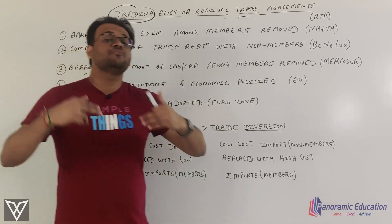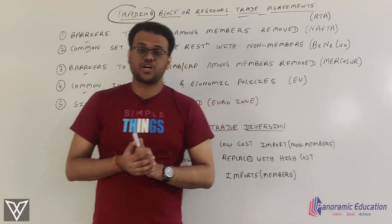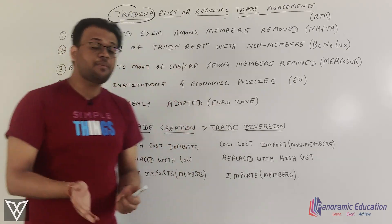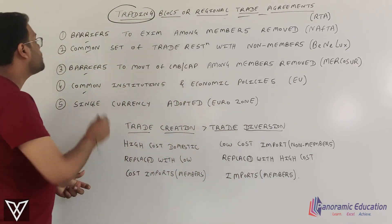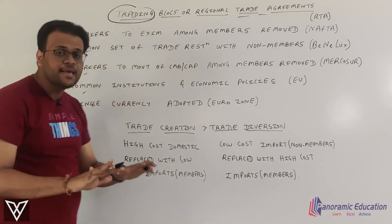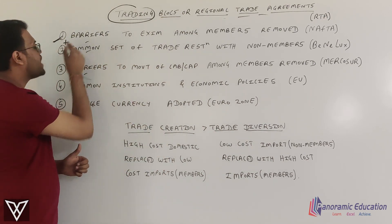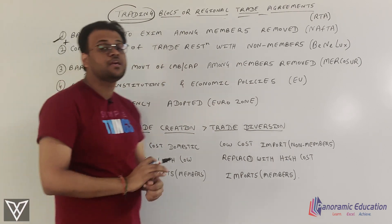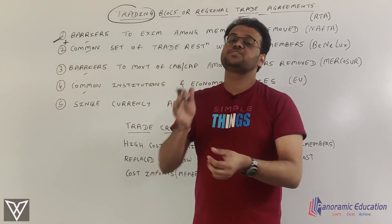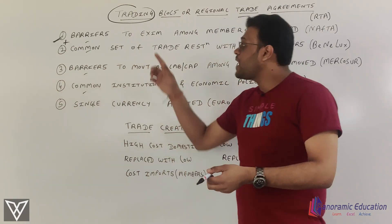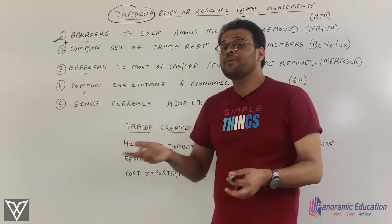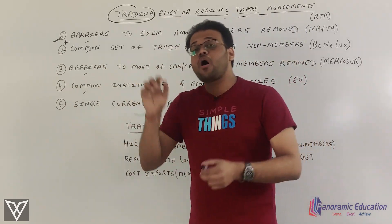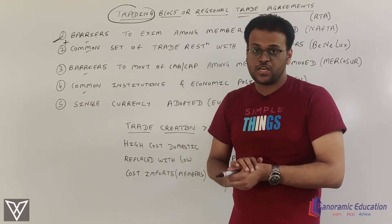If you want to deepen your relations beyond a free trade agreement, you move to a customs union. These five models work on a cumulative basis. So free trade agreement covers only the first point; customs union covers the first and second; common market covers the first, second, and third; and economic union covers all up to the fourth.